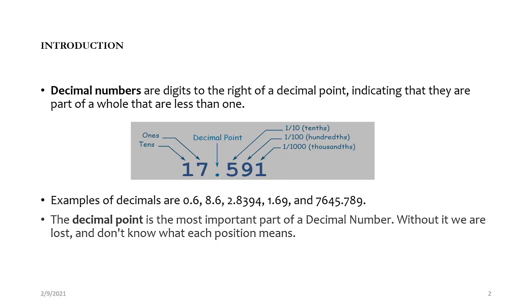Examples of decimal numbers: 0.6 means six tenths. 8.6 — the eight is the whole part, the number to the left is the whole number, and the six is the tenths. For the number 2.8334, the two is the whole part. The 8 is the tenths, 3 is the hundredths, the next 3 is the thousandths, and 4 is the ten-thousandths.